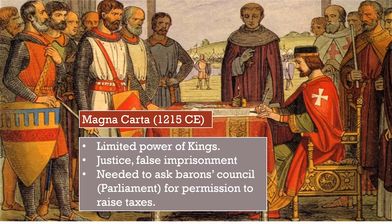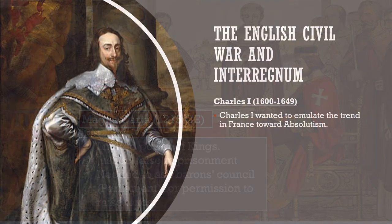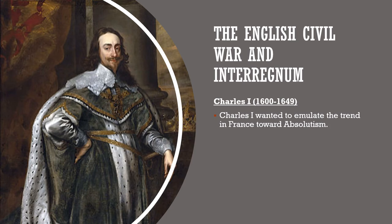Also critically important: kings were not allowed to impose taxes at will. They had to ask permission of a council of the top nobles — a baron's council, which would later be known as Parliament — to raise taxes. This created a partnership in England between Parliament and the king that simply did not exist in France, severely limiting future English kings' ability to act unilaterally. Charles I is a king who certainly tried to exert power like an absolute ruler.